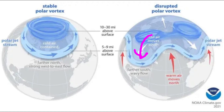So looking ahead to January — is a weakening of the polar vortex in the cards? Will there be a shift in the jet stream that allows much colder air to come down into the United States? Let's take a look at current conditions across Canada.